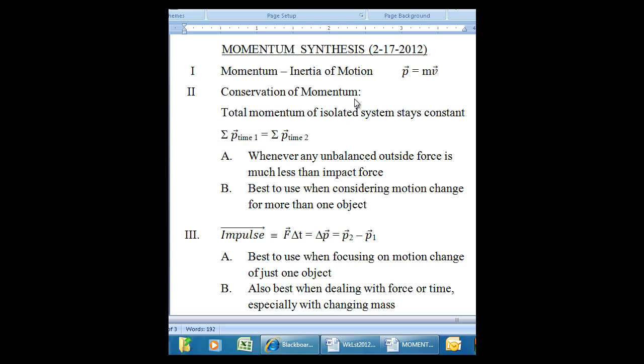Here's our problem statement, and we want to review the information from Chapter 7. We have momentum being conserved whenever any unbalanced outside force is much less than impact force, and best to be using when you're considering a motion change for more than one object. In this problem we have a bat and a ball. The bat is changing its motion some, but it has a very large outside force on it. The ball is also changing its motion quite a bit, and because it's being hit by a bat, it has a very large outside force on it. So we can only use conservation of momentum for the bat and the ball if we consider them jointly as part of a system.